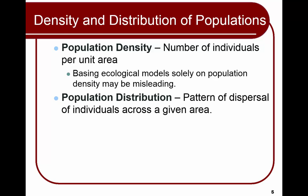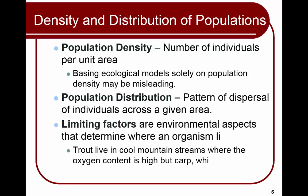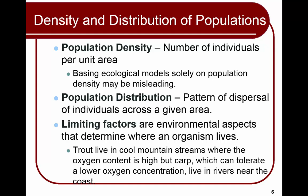Population distribution is the pattern of dispersal of individuals across an area of interest. The availability of resources influences where members of the population live — these are the limiting factors. For instance, trout live in cool mountain streams because of the high oxygen content, but carp don't need that high oxygen content, so they live in rivers near the coast. The oxygen content of the water is the limiting factor there.